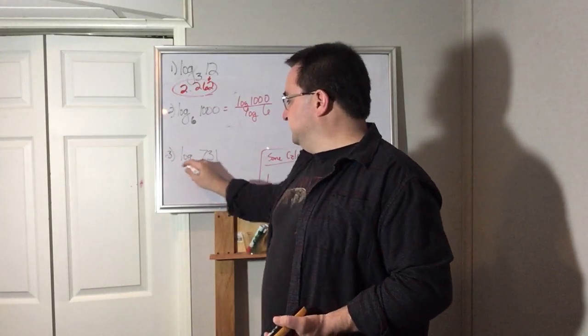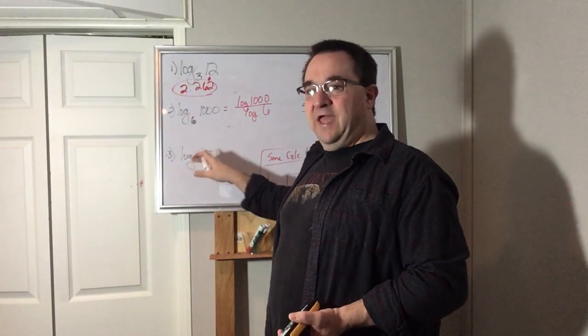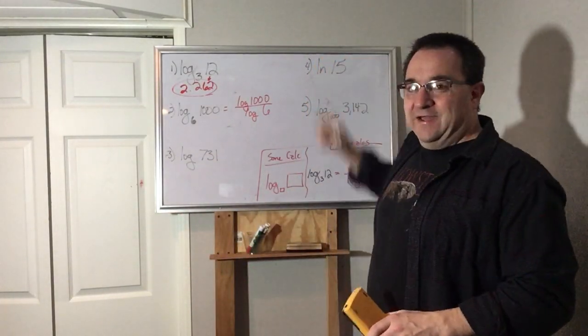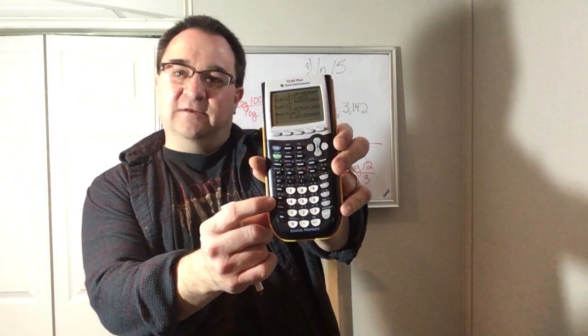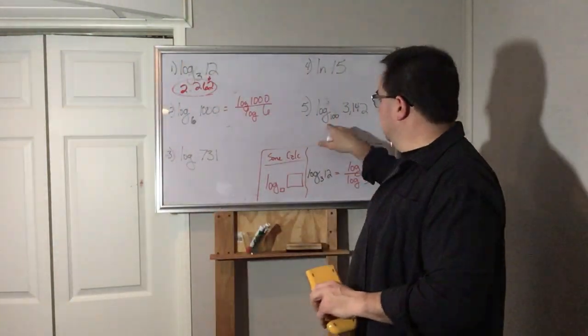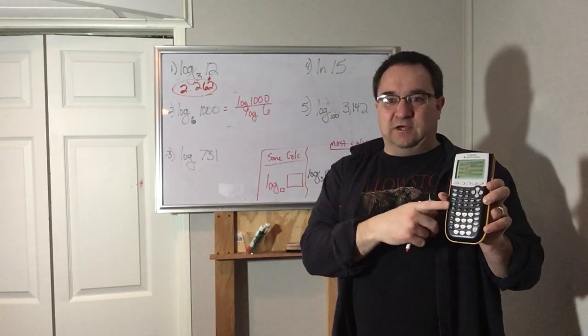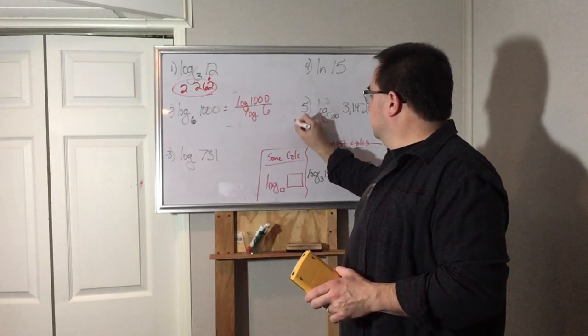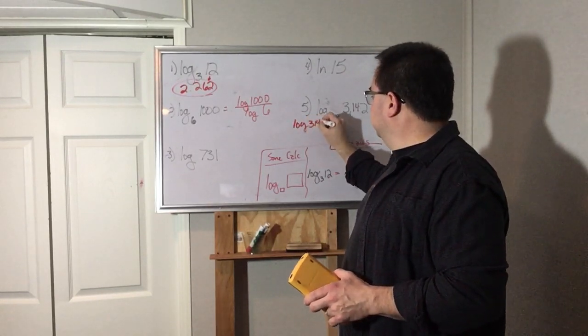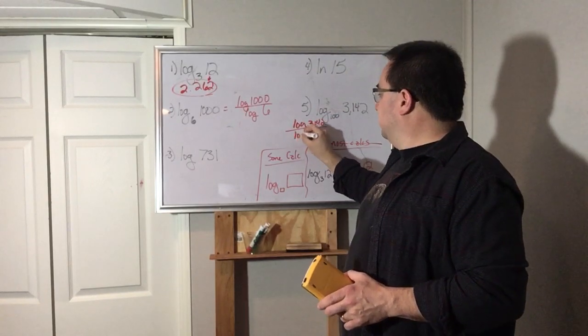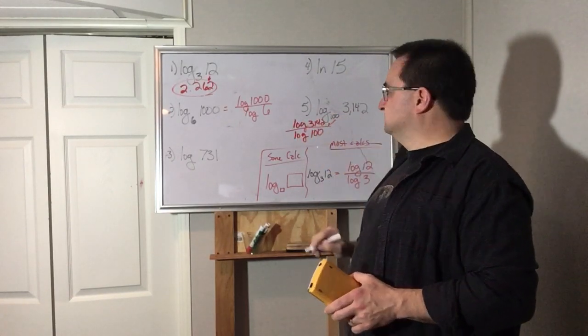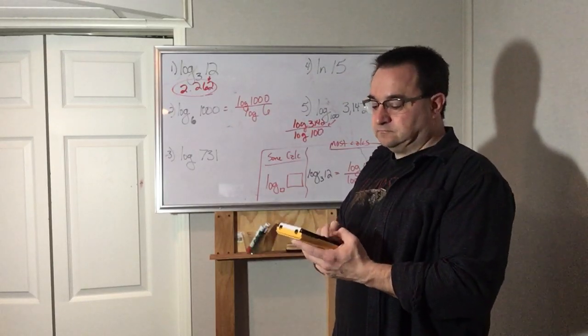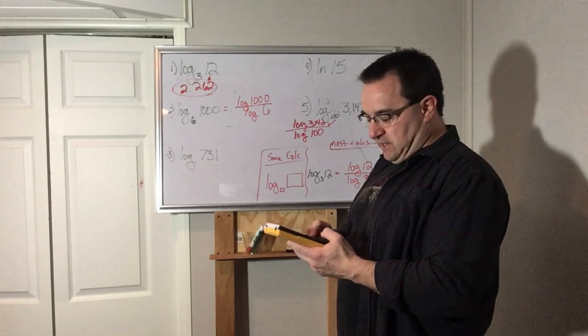I'm just going to rewrite them all. This is, see how this is a regular log? I don't have to rewrite it because I can just use the log button. LN, I don't have to rewrite it, I can use the LN button. Log base 100, there is no log base 100 button, so I have to rewrite this one. This would be log of 3,142 divided by log of 100. So let's see. Log of 1,000 divided by log of 6, so I'm getting 3.855.